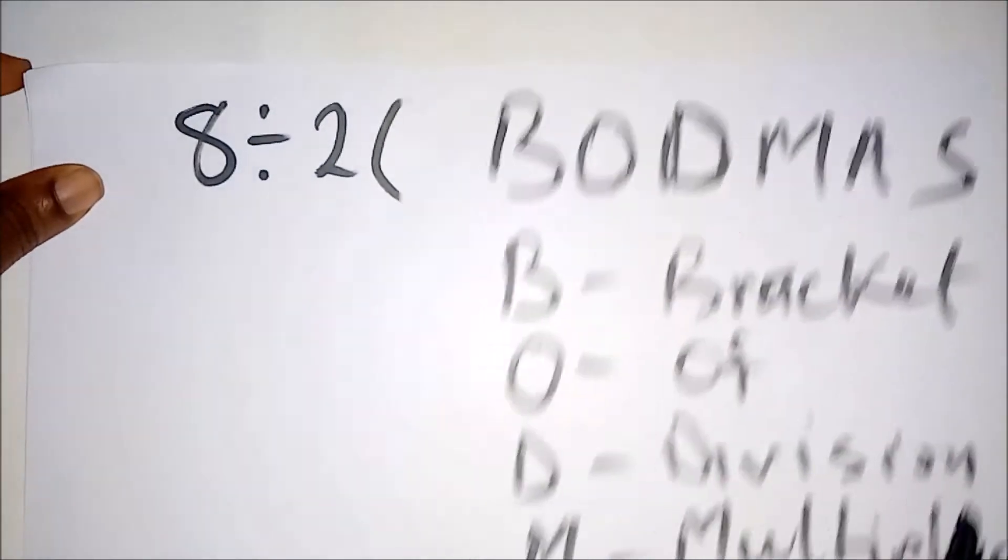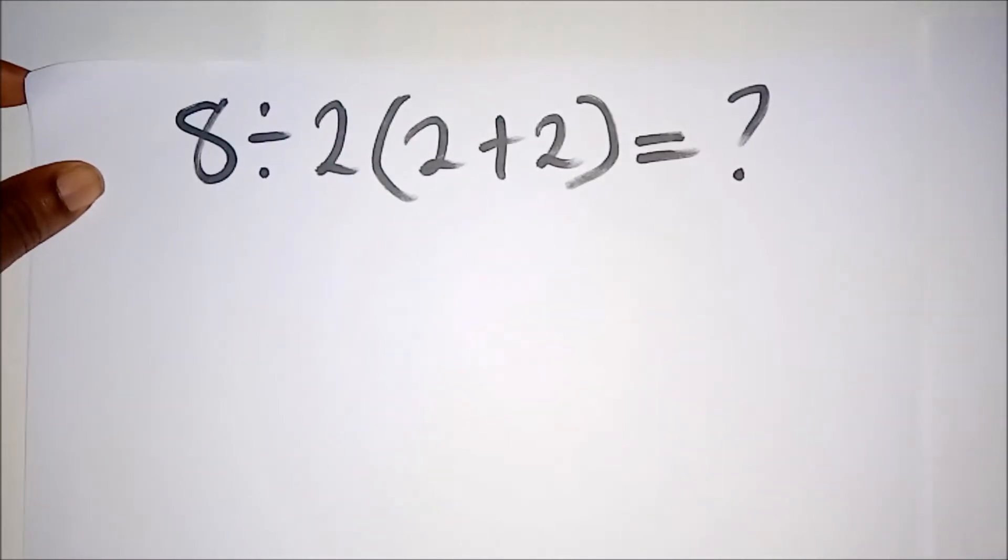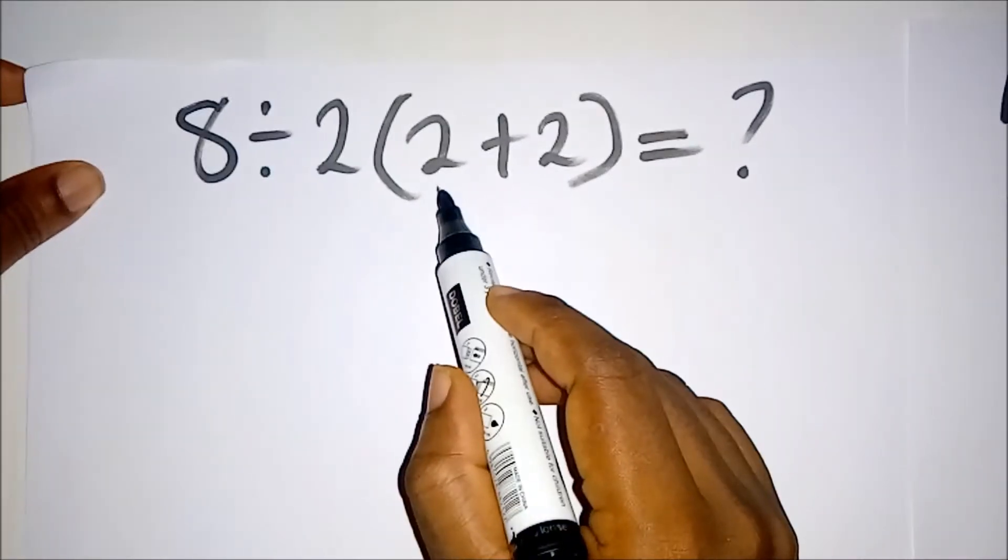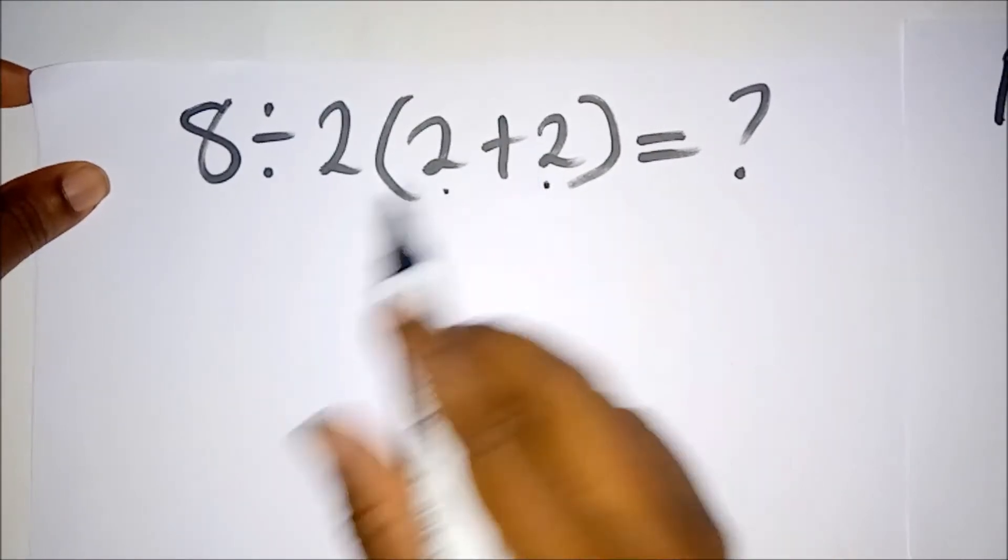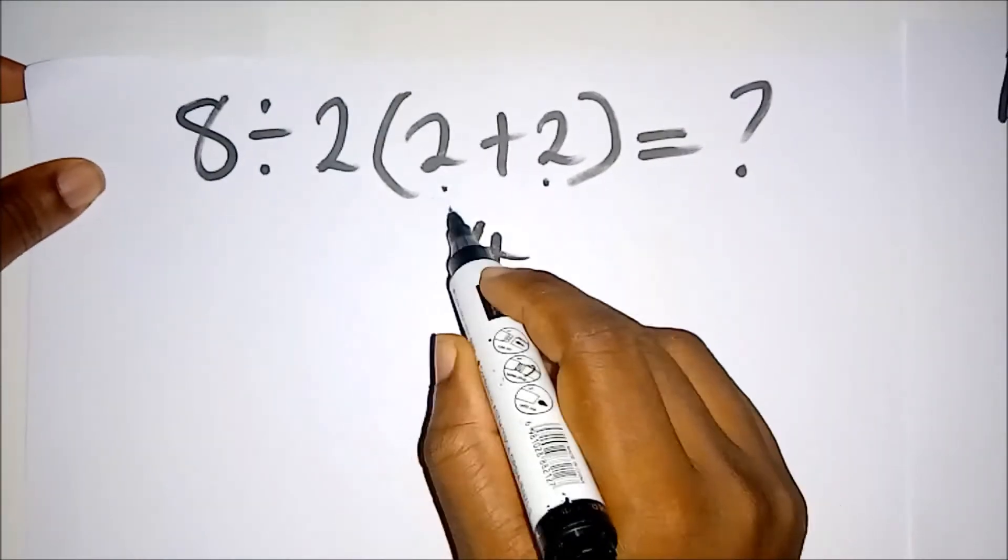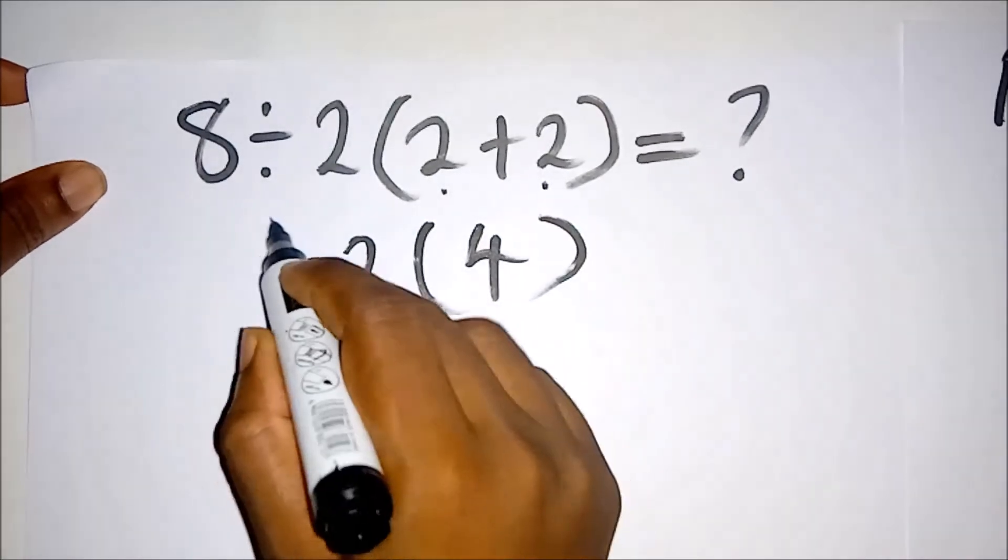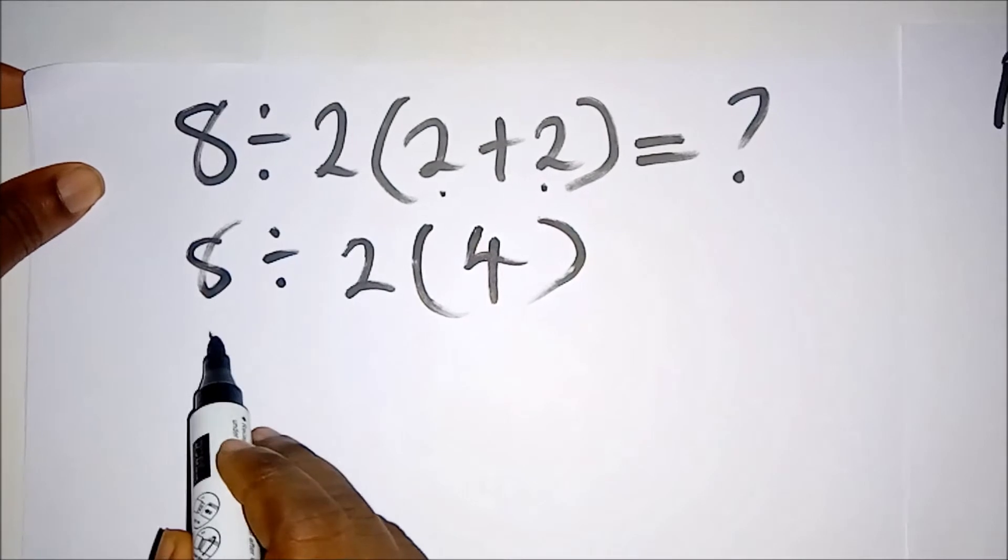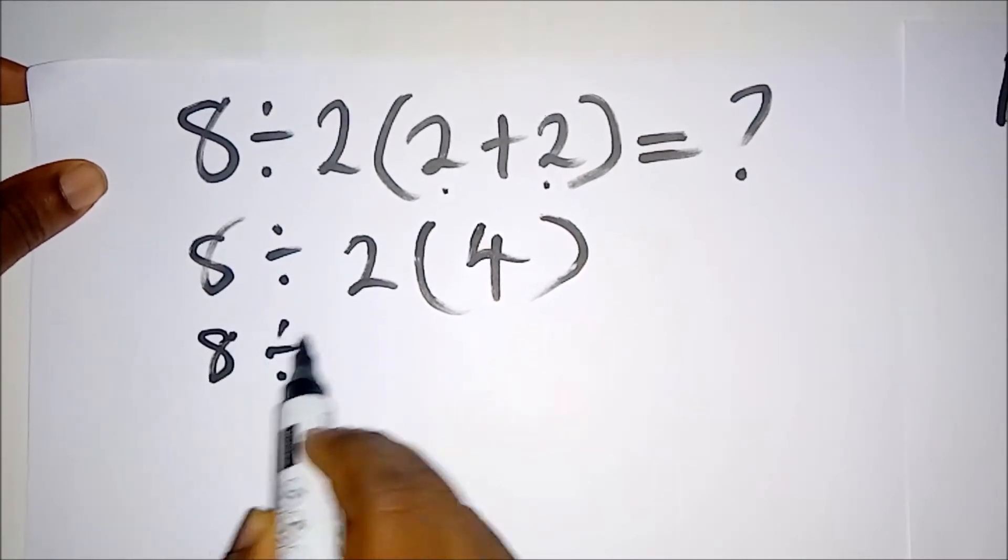So let's look at this problem now, taking this particular order of operation. The first thing is bracket, so we have to solve what's in the bracket. What's in the bracket? That's 2 plus 2. And what's 2 plus 2? That will give us a 4. So we have 8 divided by 2, and this bracket means multiplication, so we have 8 divided by 2 times 4.